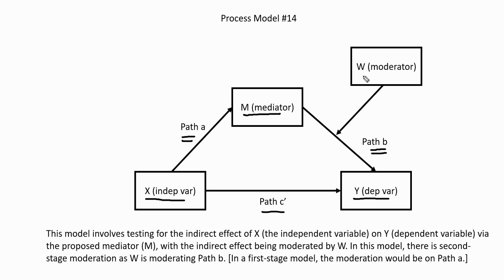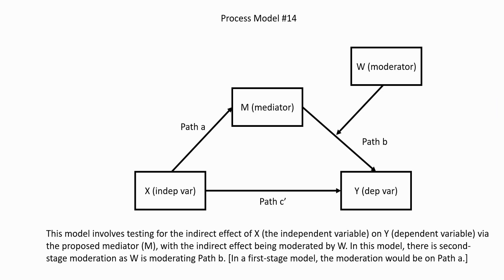In this model, we've added variable W as our moderating variable. You'll see that we have a path drawn from our moderating variable to path B, and what that reflects is the conceptualization that path B actually varies across levels of the moderating variable. In more practical terms, this means that the effect of the mediator on the dependent variable itself varies across levels of the moderator.